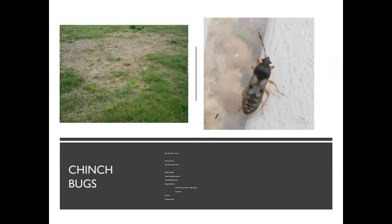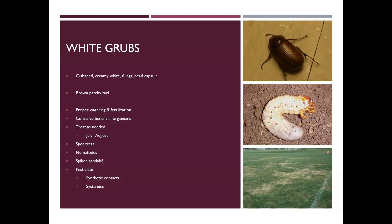Chinch bugs can be active spring through fall, but they are most prevalent at hotter, drier times of the year. We usually see a lot of chinch bug damage in mid to late summer. A lot of times their damage starts near a driveway or sidewalk — something that is wicking moisture out of the soil or turf in that area.